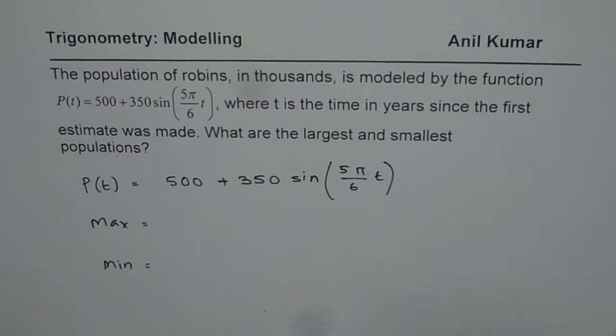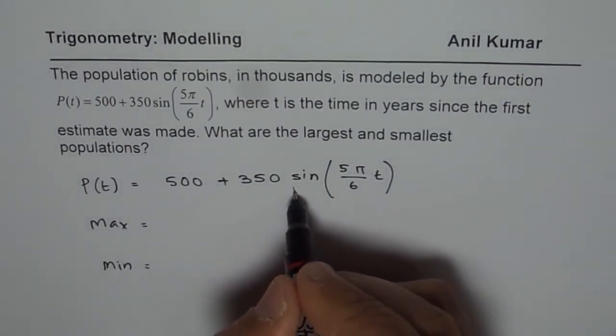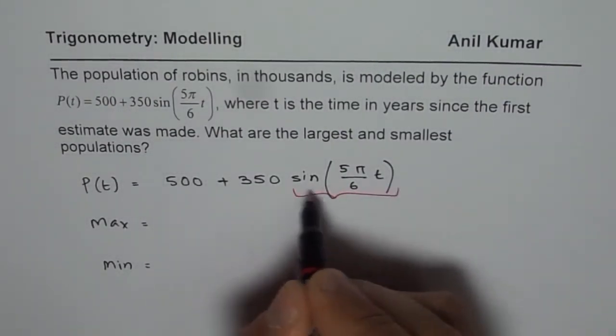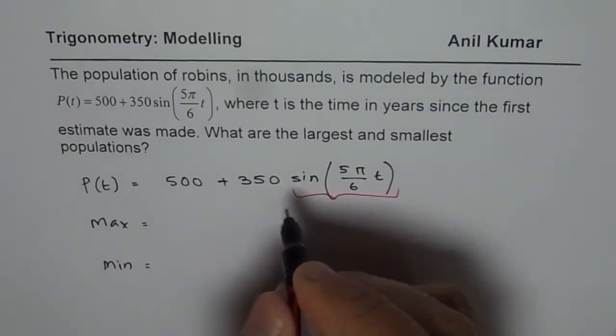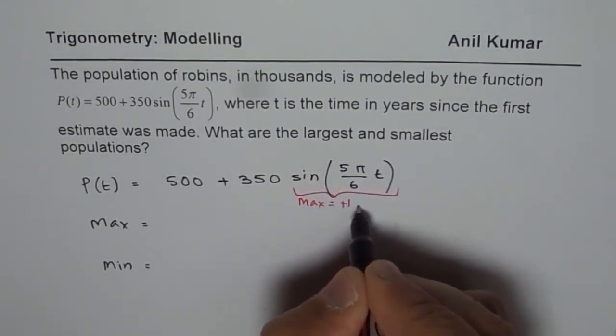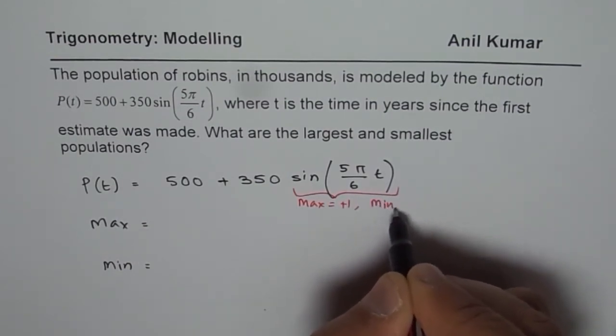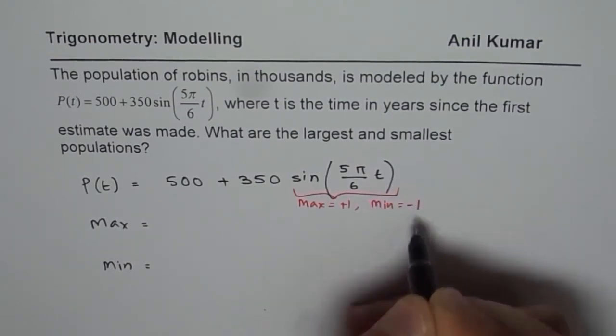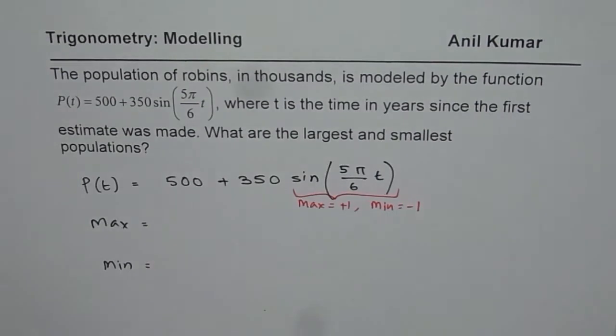Now, here is the key. What is the maximum and minimum value of the sine function? The maximum value equals +1 and the minimum equals -1. That will give you the maximum and minimum of the population. That is the key to understand.